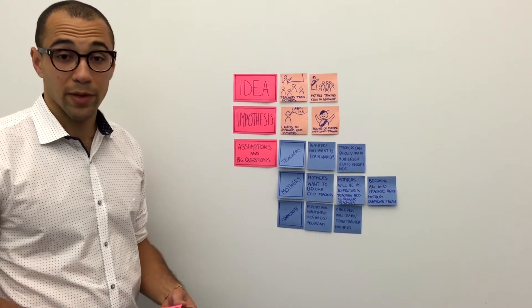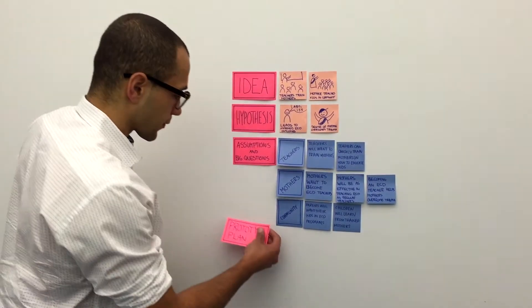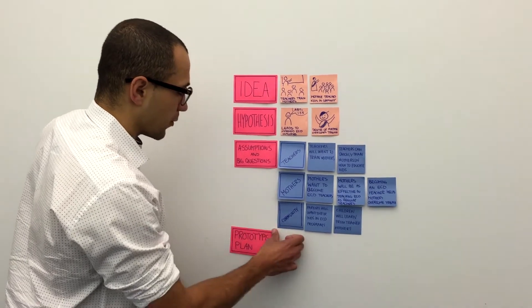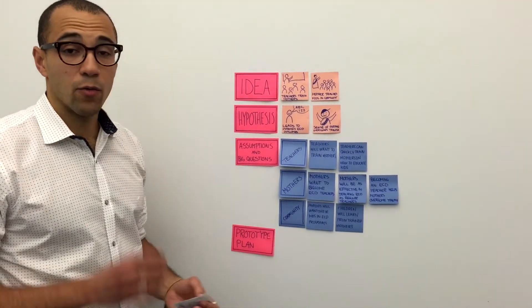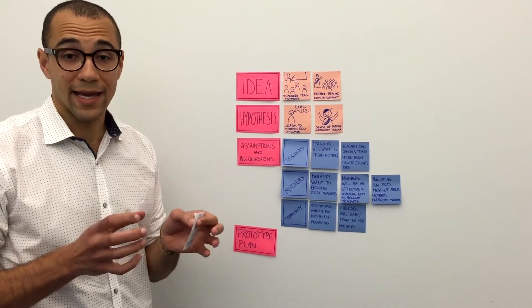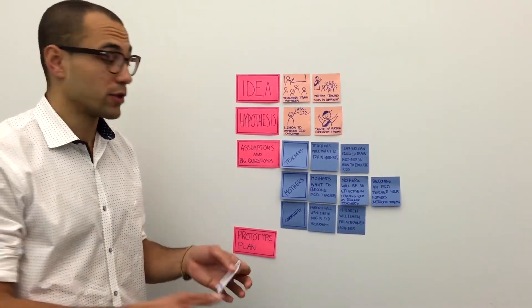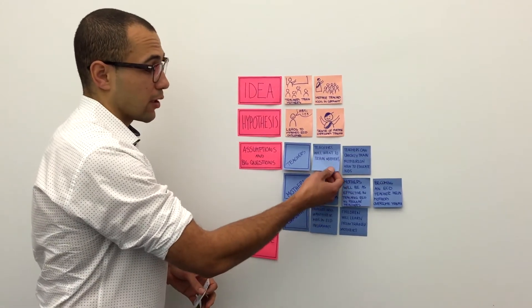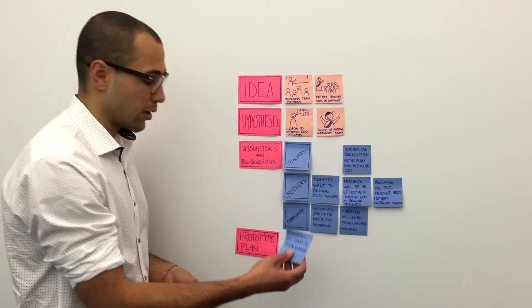The next step we can take is to make a prototyping plan. In a prototyping plan, what we want to do is take one or two of the big assumptions or big questions and create a test that helps us answer that question or assumption. So let's take the first one, for example, our assumption that teachers will want to train mothers.